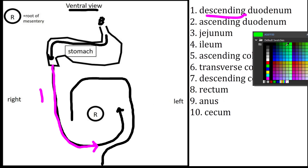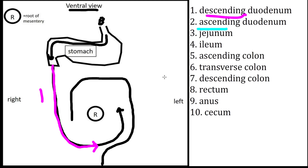Our next structure will be the ascending duodenum, which continues from the caudal duodenal flexure and heads cranially to the left of the root of the mesentery.